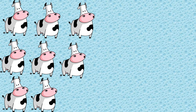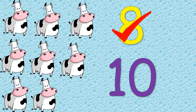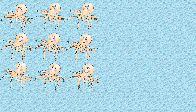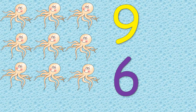What are these? These are cows. How many cows are there? Correct. There are eight cows. What are these? These are octopuses. How many octopuses are there? Correct. There are nine octopuses.